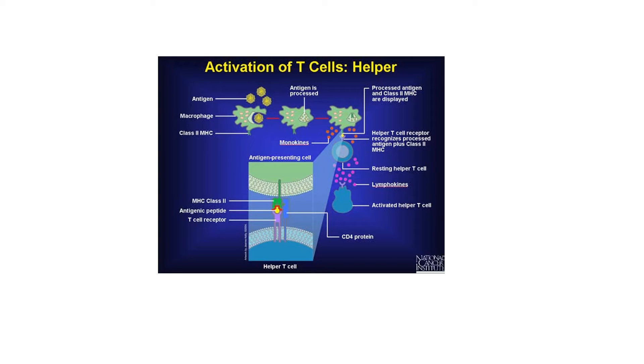Once inside the body, the antigen will be phagocytized by an antigen presenting cell. In this case, they happen to be using a macrophage as an example of an antigen presenting cell. Once the antigen presenting cell phagocytizes the antigen, the antigen is sent to the lysosomes where the enzymes within the lysosomes break down the antigen to epitopes.